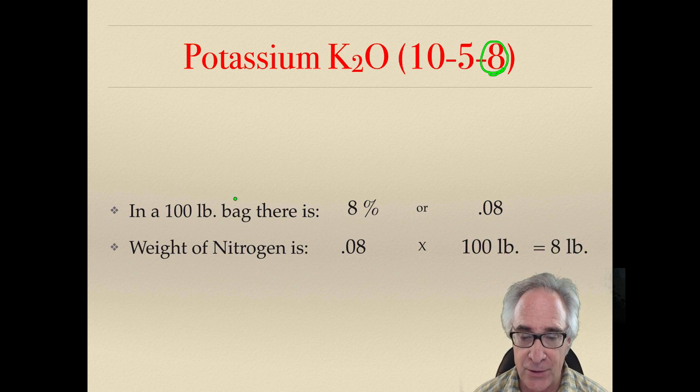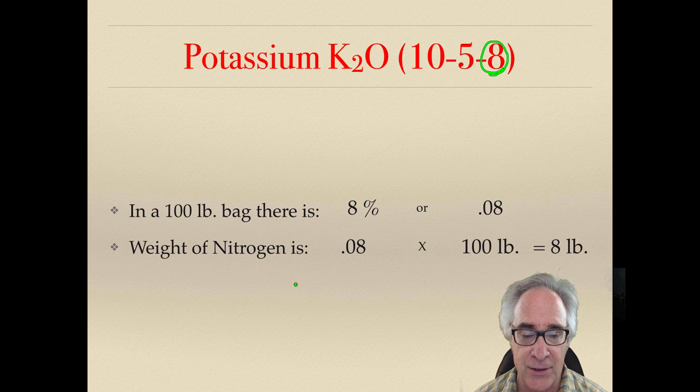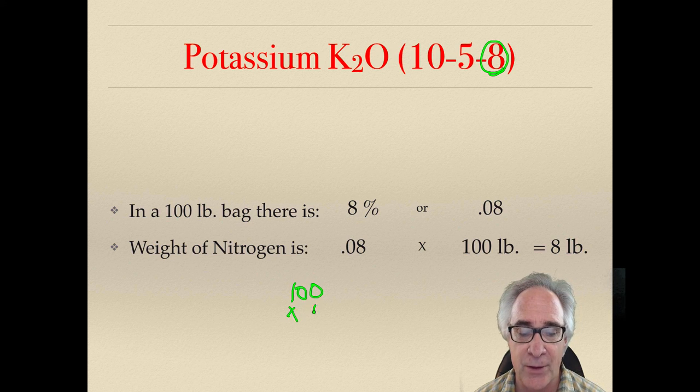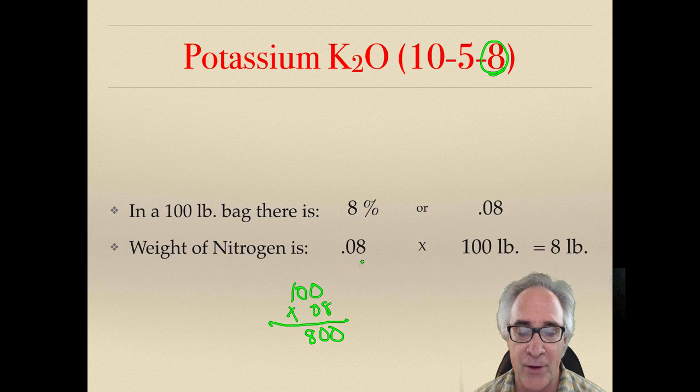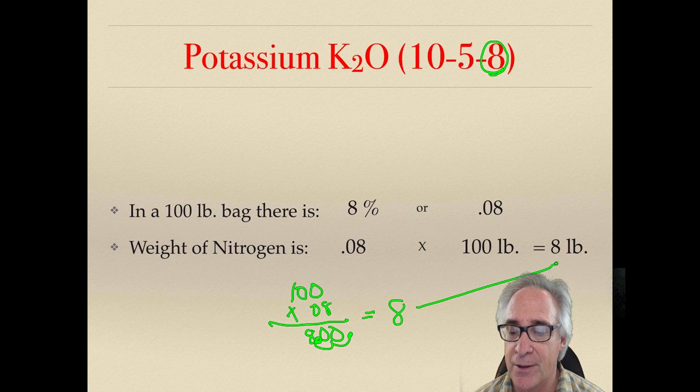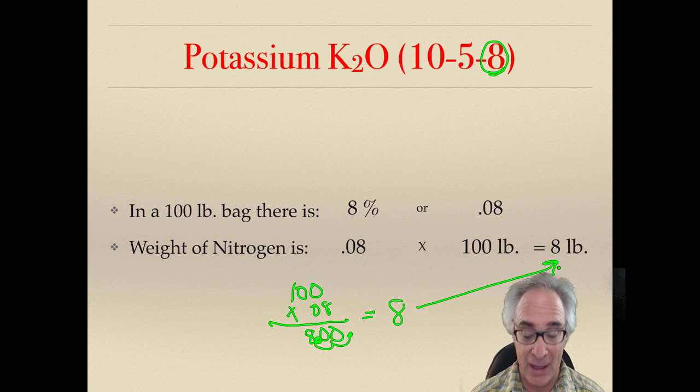So just to keep myself honest here, let's just do this: 100 times .08. And you multiply that 8, that's 100. And remember there's 2, 1, 2. So we're going to move this over, 1, 2. So we get 8 pounds. There you go. That's how the math is done.